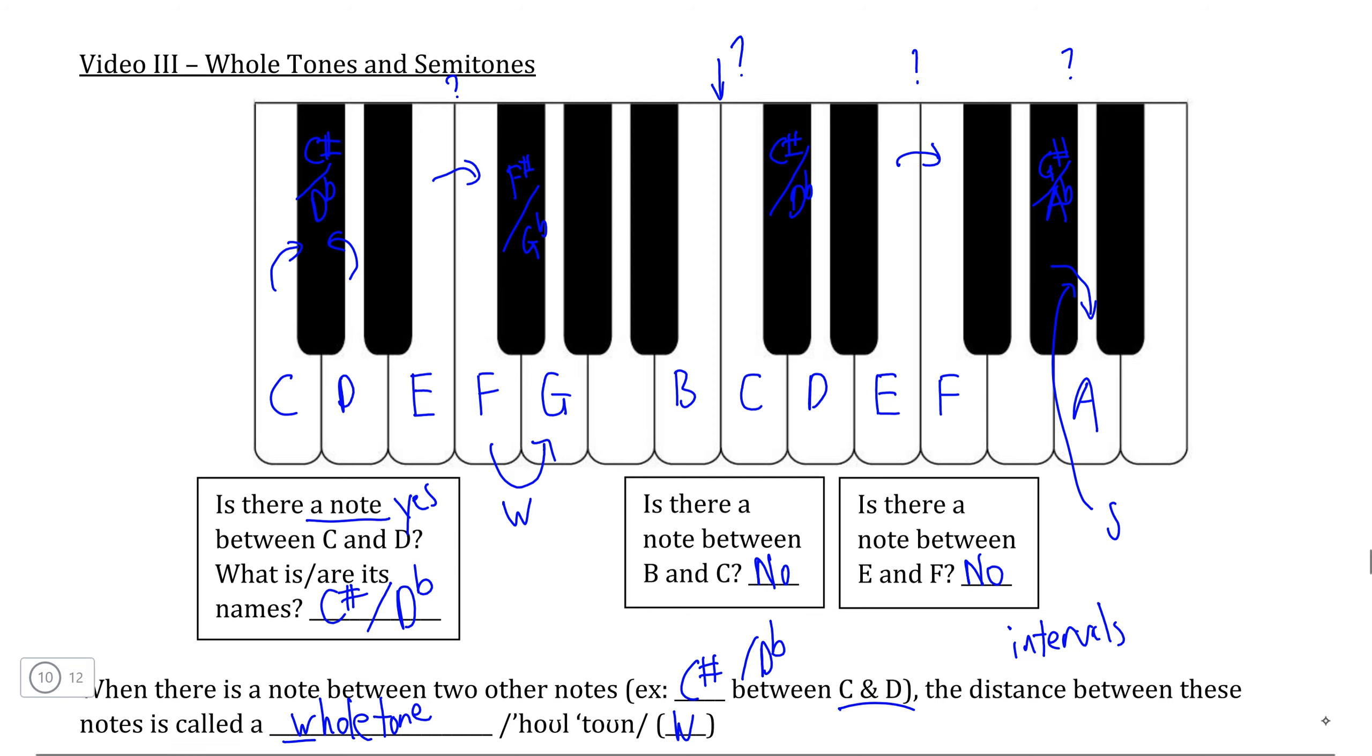So again, it's a relatively simple idea to visualize, especially on the piano, but the piano is necessary to show that certain pairs of white keys or natural pitches do not actually have a black key in between them, which makes it a useful tool to determine whether we are looking at a whole tone or a semitone.